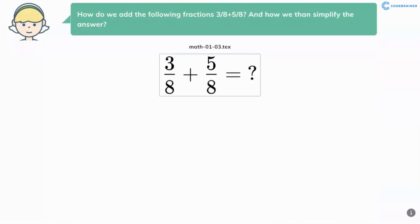How do we add the following fractions 3 eighths plus 5 eighths? And how do we then simplify the answer?